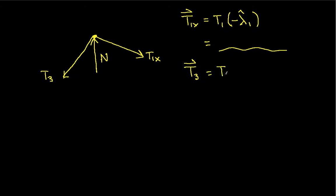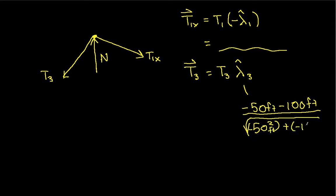t3 will be the magnitude t3, which we don't know and we have to solve for, times the unit vector lambda hat 3. And lambda hat 3, this is going to be minus 50 feet i minus 100 feet j over the square root of 50 squared plus negative 100 feet squared. So this is a pretty easy vector to find. And n, we know the vector is going to be the magnitude times j-hat.